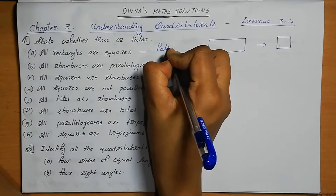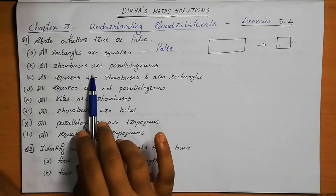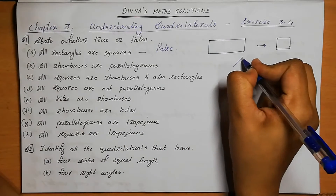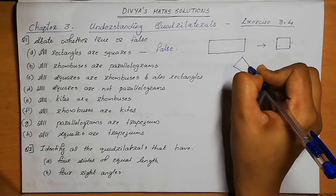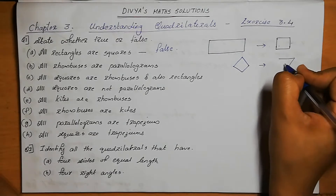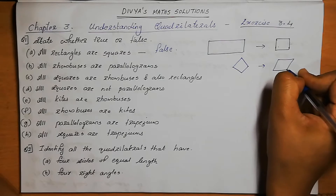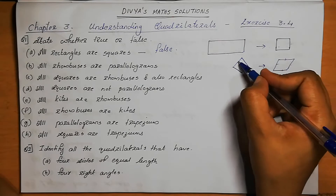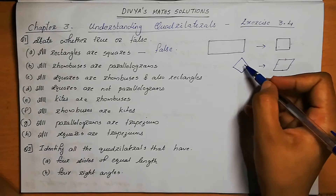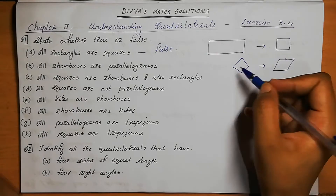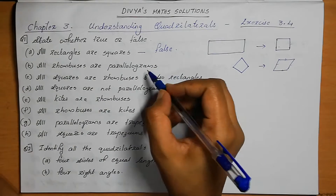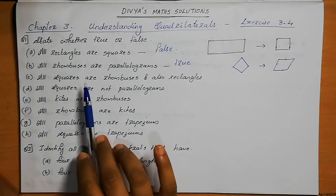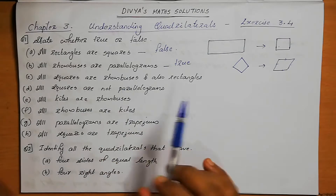Next: all rhombuses are parallelograms. A rhombus looks like this. A parallelogram means opposites are parallel and equal. In a rhombus, opposites are also parallel and equal, so all rhombuses are parallelograms is possible — this is a true statement.